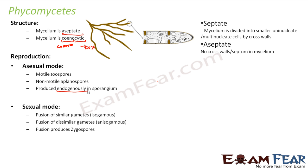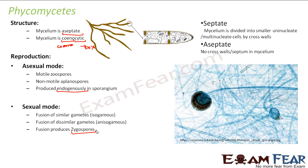In sexual reproduction, fusion of similar gametes can occur, which is known as isogamous, and fusion of dissimilar gametes can also happen, which is known as anisogamous. This fusion results in the formation of zygospores. In this picture, you can see the example of Rhizopus, a phycomycetes, and the sporangia — the blob-like structures — which give rise to the spores.